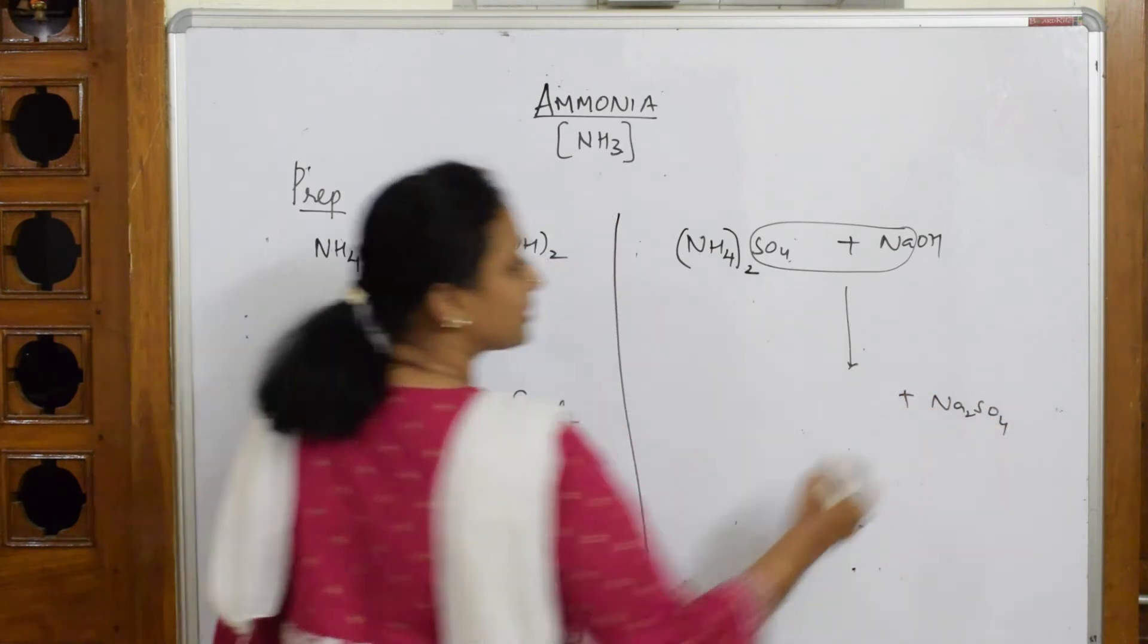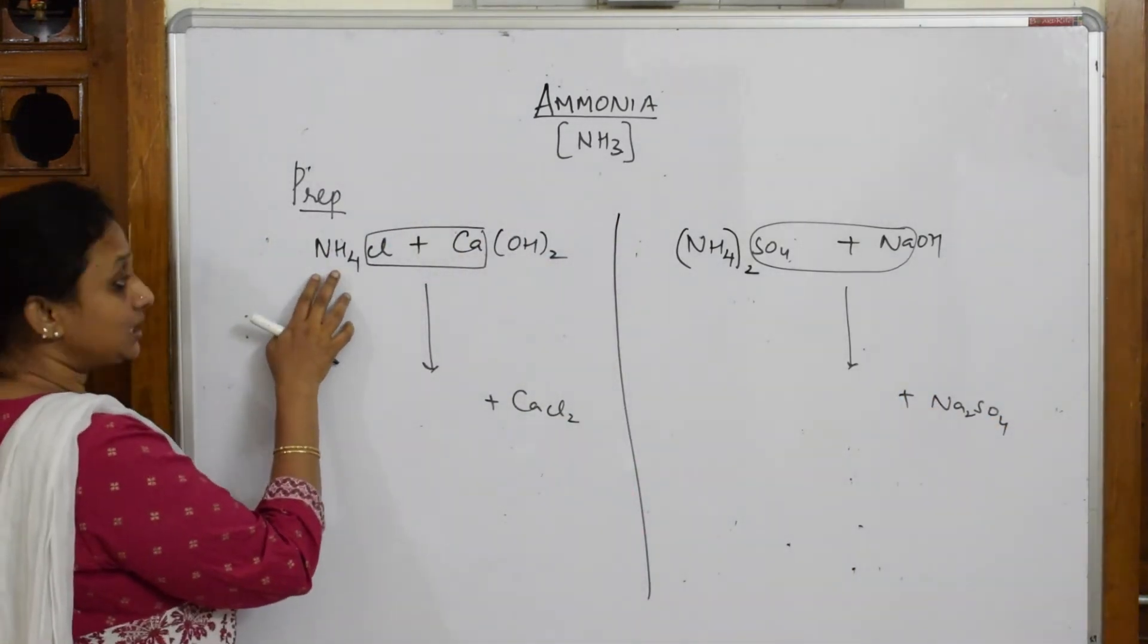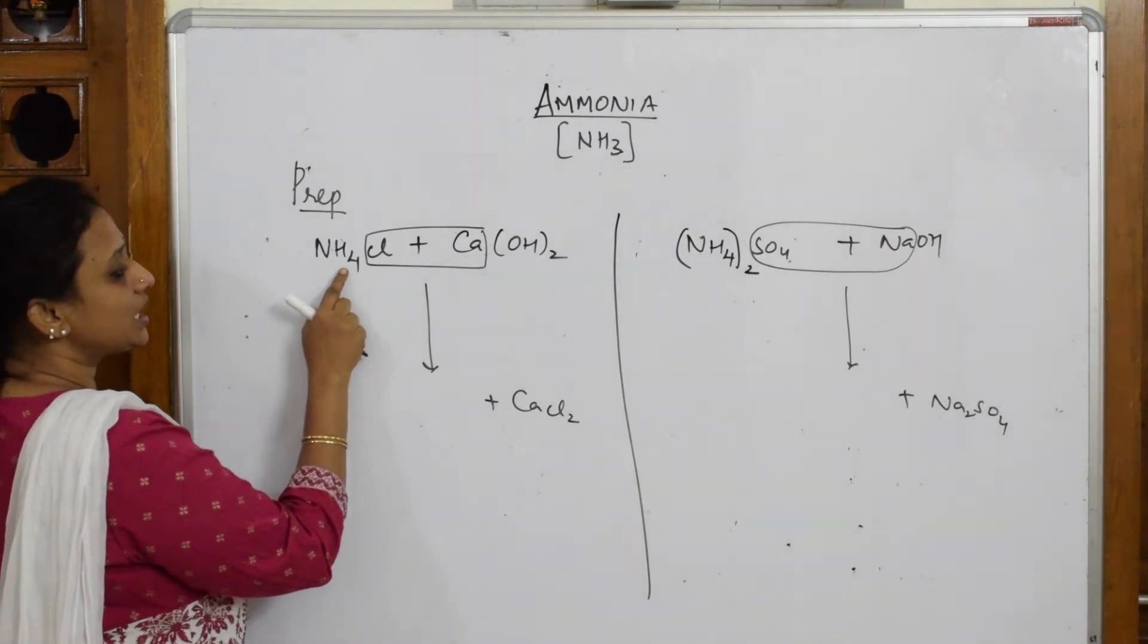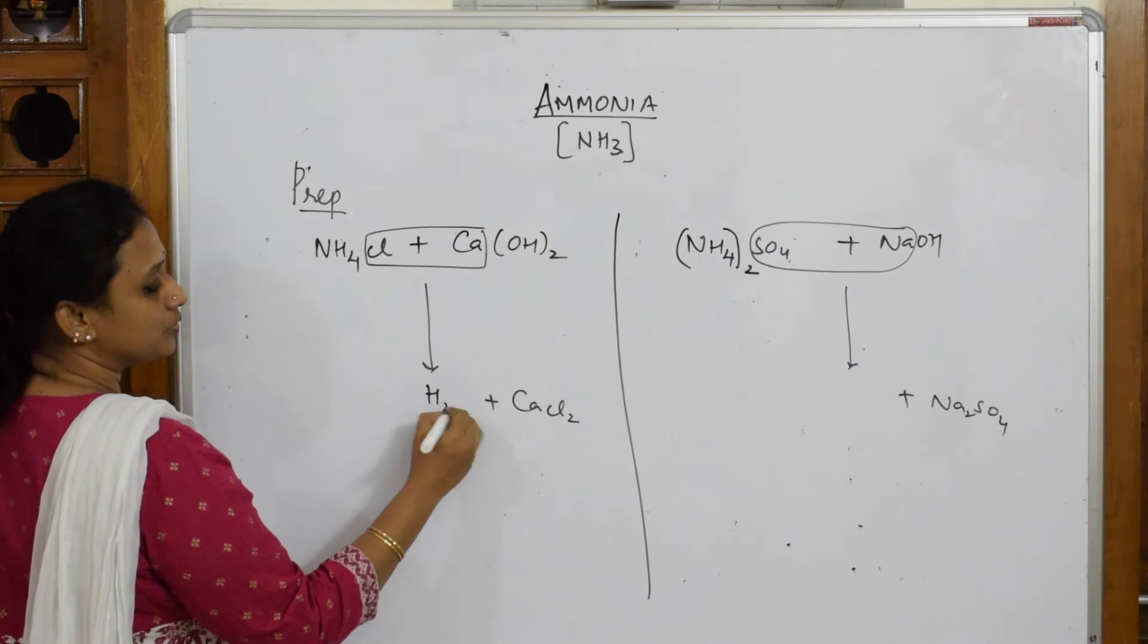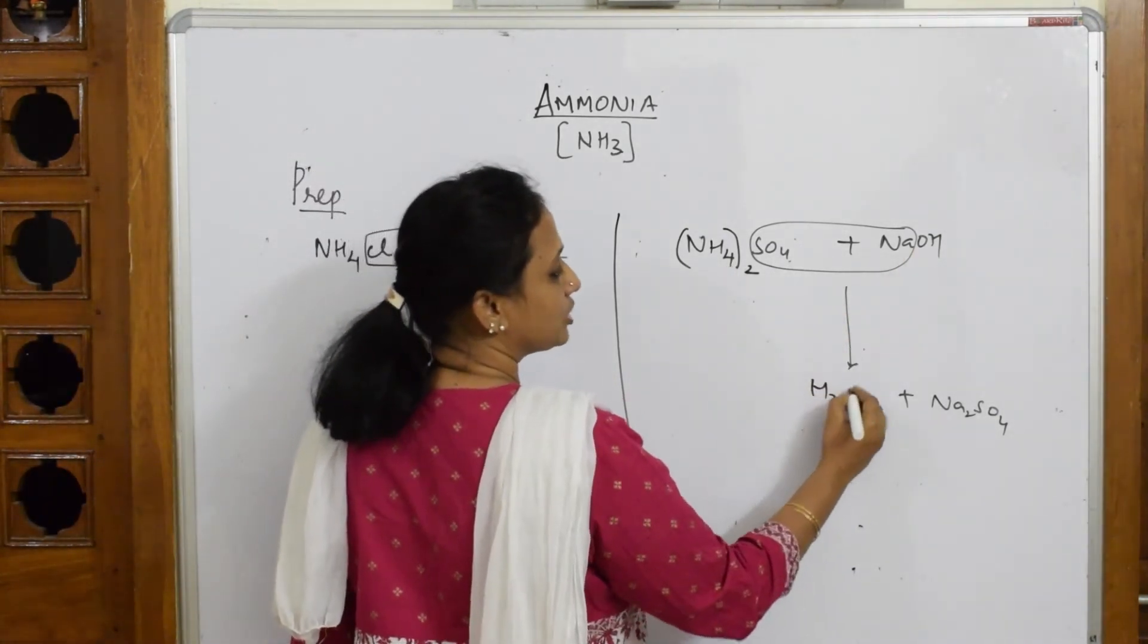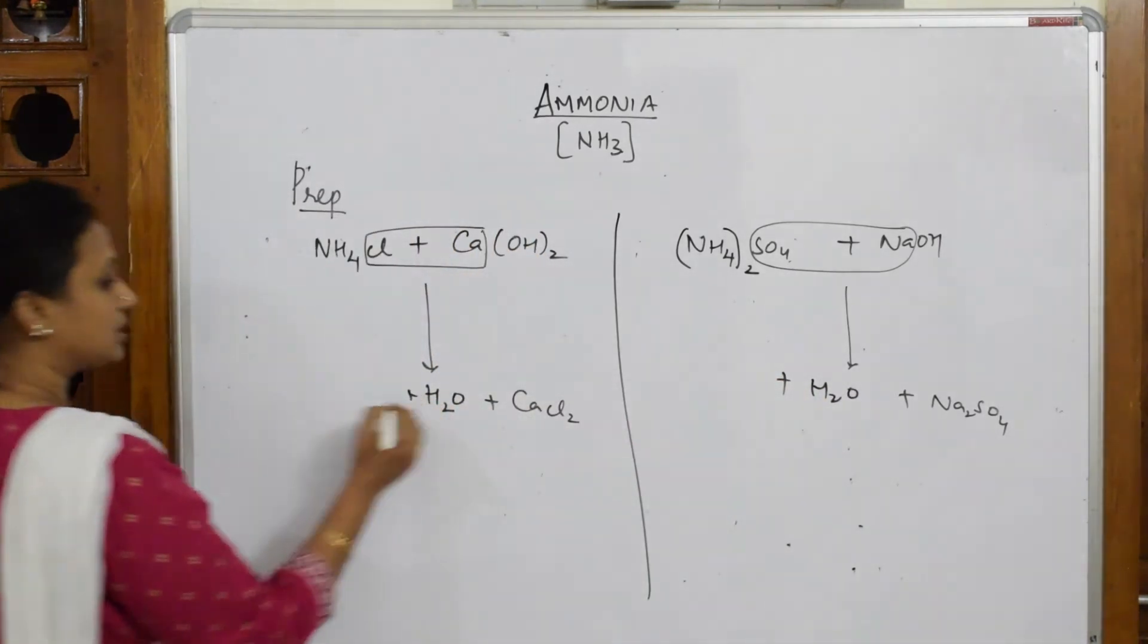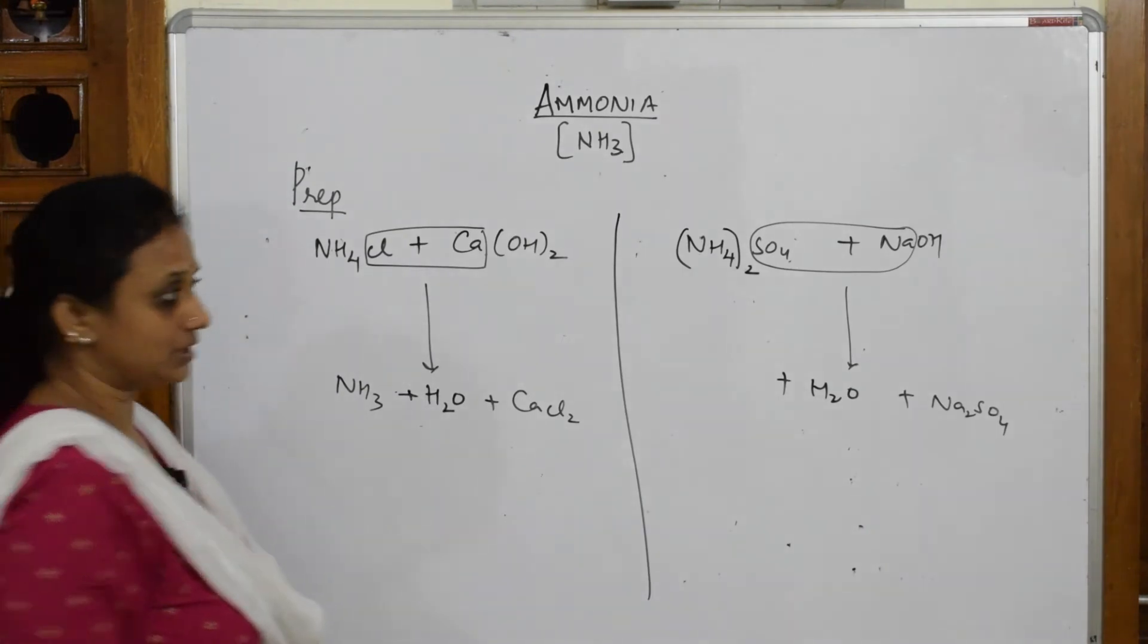Now let's come back to this reaction. In this reaction you have ammonium. One hydrogen from here and this OH comes out as water molecule. One hydrogen from here, this OH comes out as water molecule. Now what is left? You are left with NH3 which we have prepared.